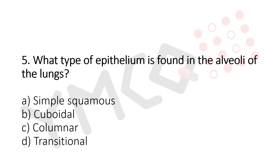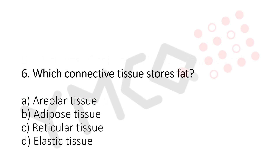Question 5: What type of epithelium is found in the alveoli of the lung? Option A: simple squamous. Option B: cuboidal. Option C: columnar. Option D: transitional. The answer is Option A, simple squamous.